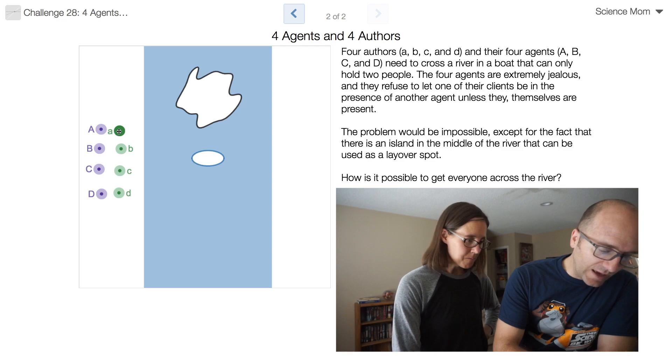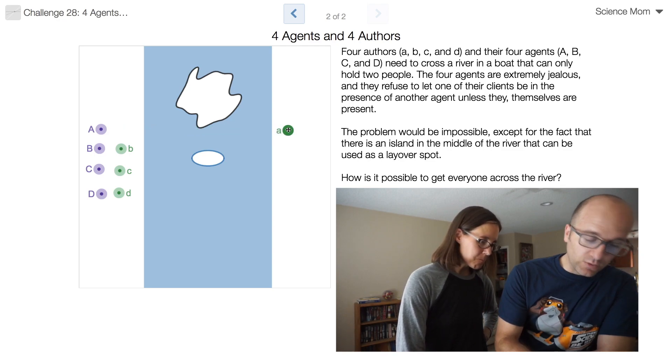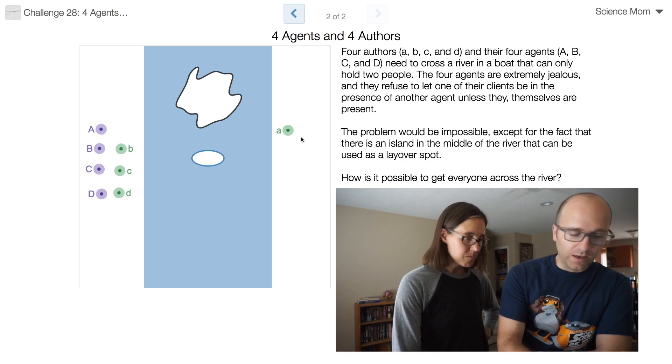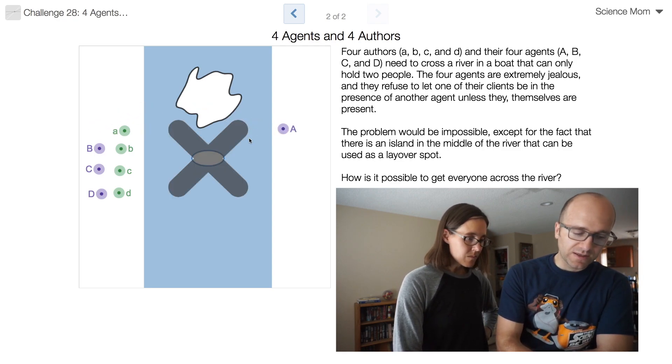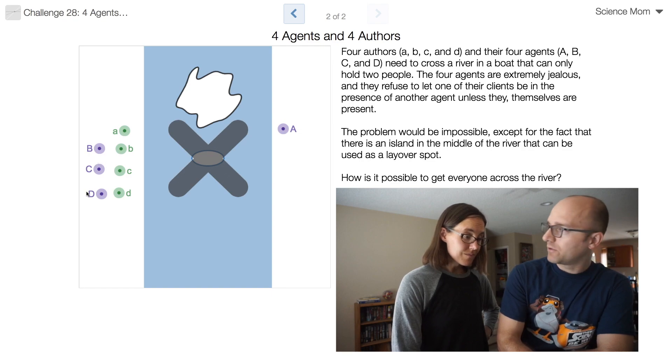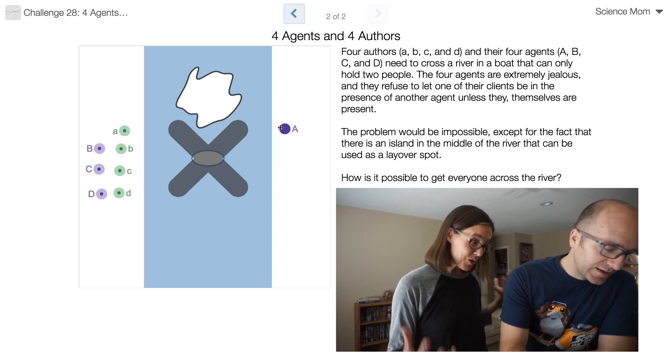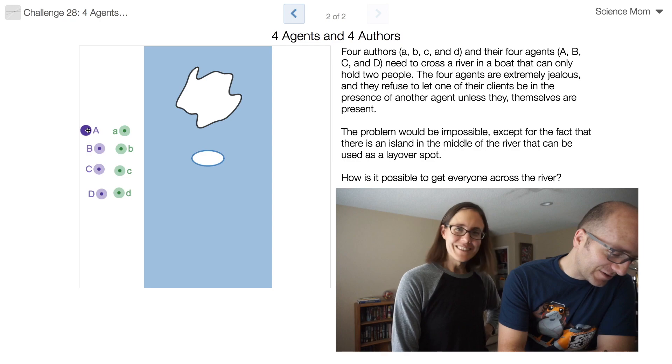So for example we've got this A up top. It's okay for author A to be over here but agent A can't be over here because that leaves author A with the other three agents. Might sign a contract with a different agent. Yeah, we just can't risk it.